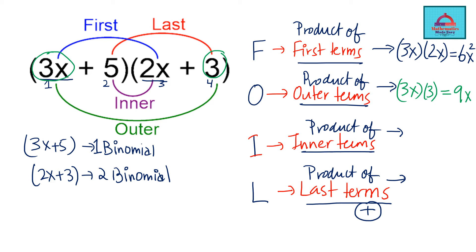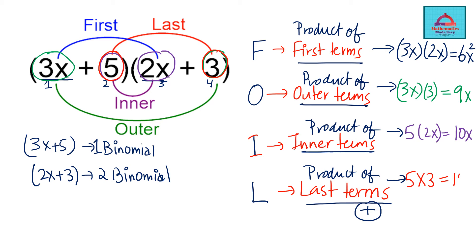Now the product of inner terms — the inner, or inside, terms. The inside term of the first binomial is 5 and the inside term of the second binomial is 2x. So 5 multiplied with 2x gives 10x. Last but not least, the last term: 5 multiplied with 3 gives 15.